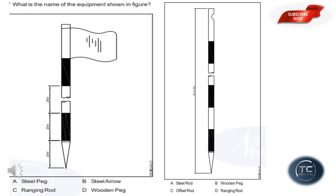What is the name of the equipment shown? The first picture is a ranging rod. The second picture is an offset rod. You need to stick it on the instrument.